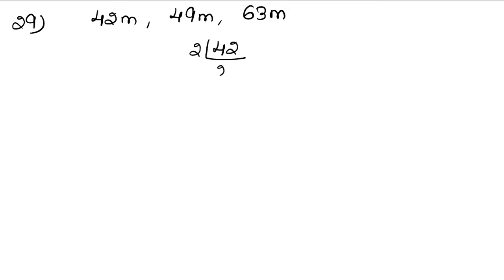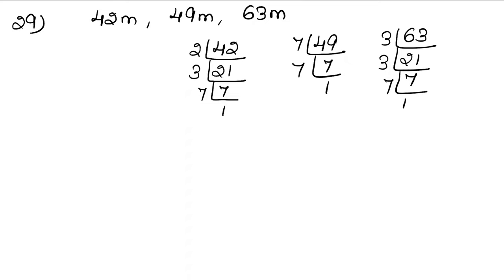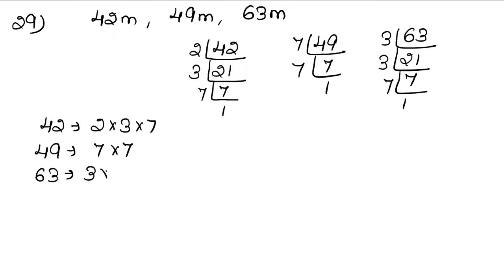For 42: 2 × 2 = 4, 2 × 1 = 2, then 3 and 7 — so 42 = 2 × 3 × 7. For 49: 7 × 7 = 49, so 49 = 7 × 7. For 63: 3 × 3 × 7 = 63. So we have 42 = 2 × 3 × 7, 49 = 7 × 7, and 63 = 3 × 3 × 7.